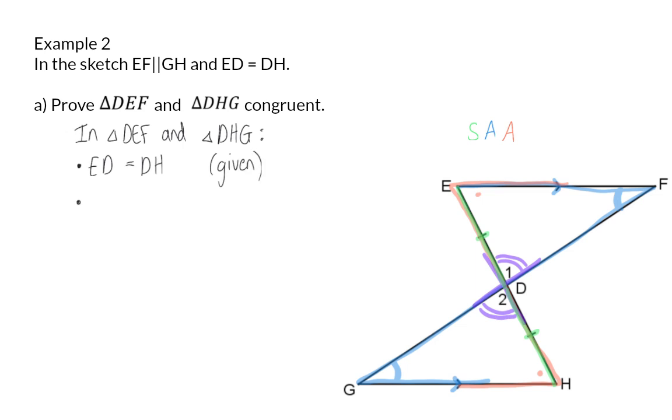For the first pair of angles, I am going to choose to use angle F, and that is equal to angle G, because of alternate angles, with our parallel lines EF being parallel to GH.